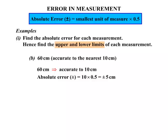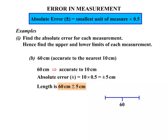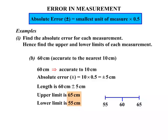That's our absolute error. For the upper and lower limits: starting from 60, we add and subtract 5 centimetres. Adding 5 centimetres gives an upper limit of 65 cm; subtracting 5 centimetres gives a lower limit of 55 cm. So a length of 60 centimetres, accurate to the nearest 10 centimetres, lies somewhere between 55 centimetres and 65 centimetres.